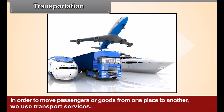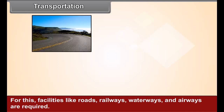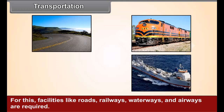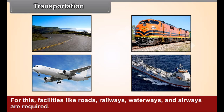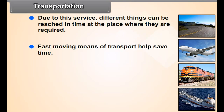Transportation: In order to move passengers or goods from one place to another, we use transport services. For this, facilities like roads, railways, waterways and airways are required. Due to this service, different things can reach in time at the place where they are required. Fast-moving means of transport help save time. During disasters, transport services assume immense importance.